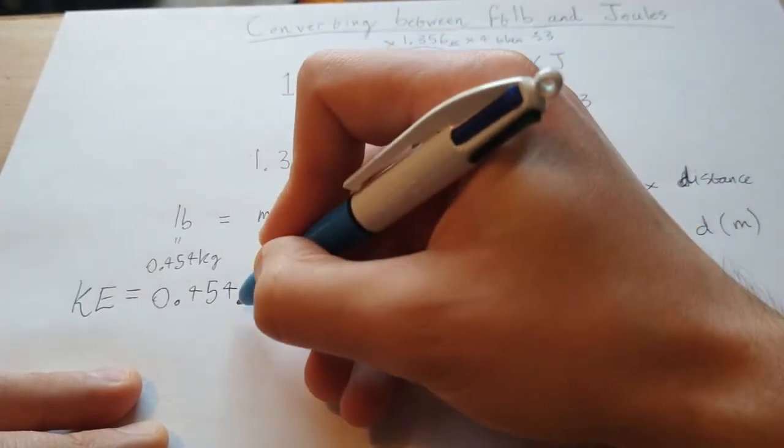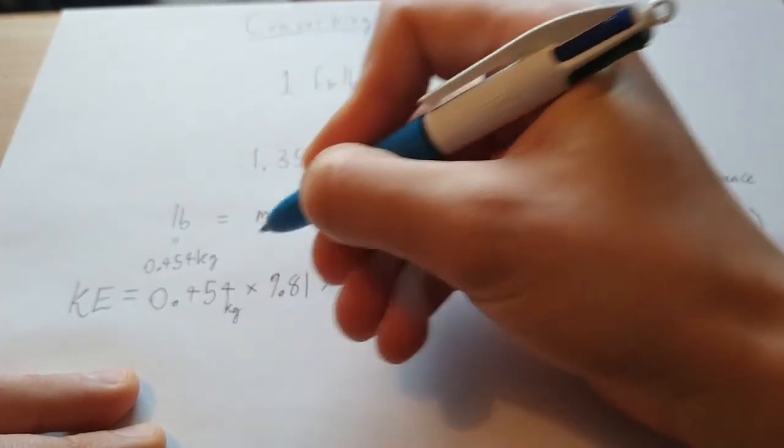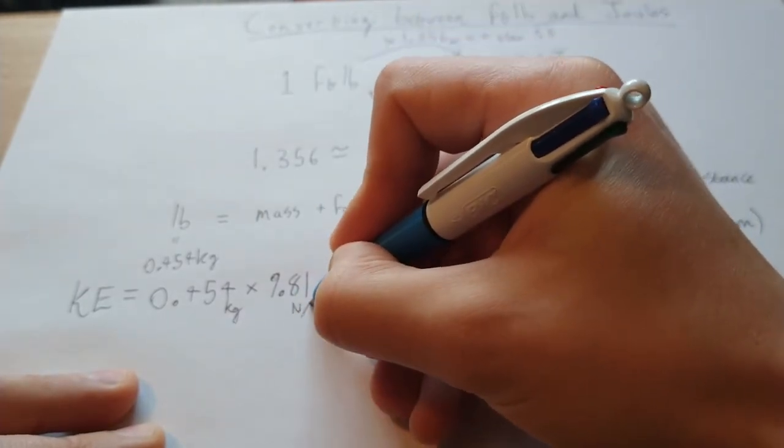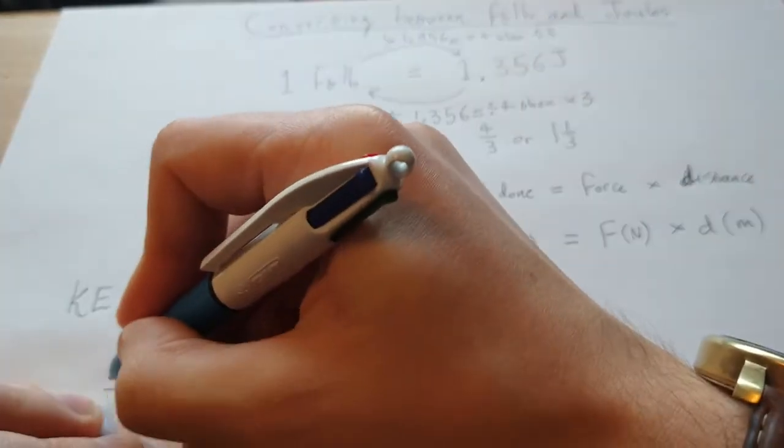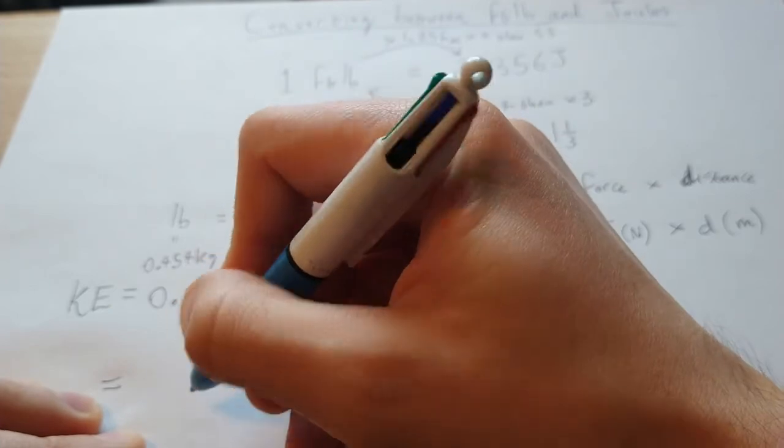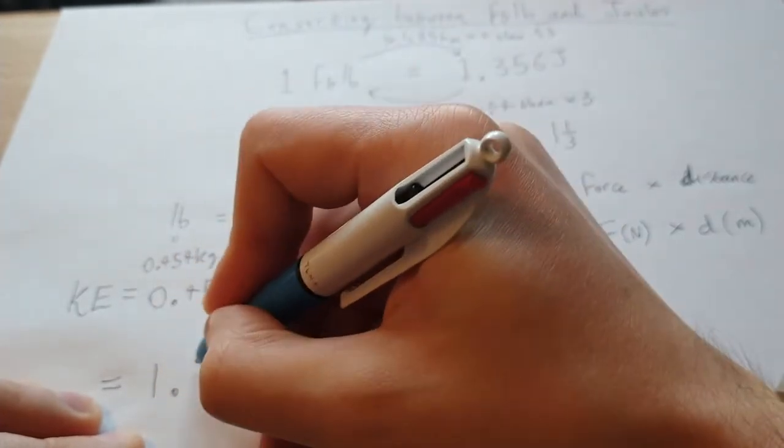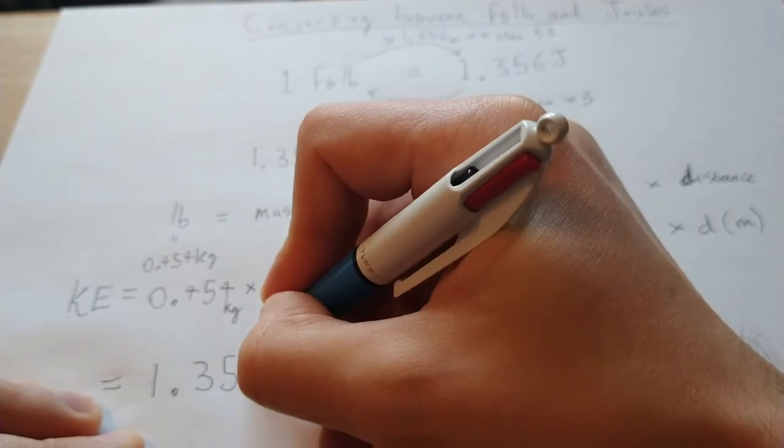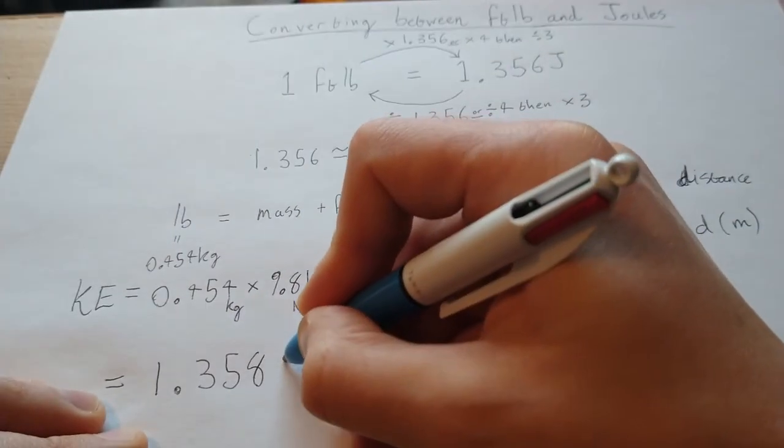So we put some units on there, so that's kilograms, that's newtons per kilogram. What we get is 1.358 joules.